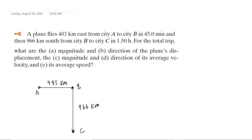The first thing we need to do is draw a picture to represent the given information. We have an airplane beginning at city A, it travels east to city B a distance of 483 kilometers, and then it travels south to city C a distance of 966 kilometers.